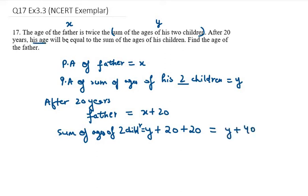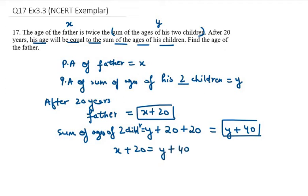It says his age will be equal to the sum of the ages of his children. This means x plus 20 equals y plus 40. So x plus 20 equals y plus 40.